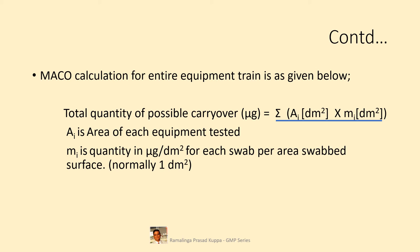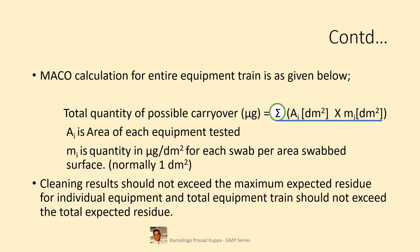Carryover for individual equipment is calculated, and the sum of all these gives the total carryover. Cleaning results should not exceed the maximum expected residue for individual equipment, and the total equipment train should not exceed the total expected residue. This is similar to understanding HPLC or GC results — each impurity should be within individual specification and the total should be within the maximum limit.